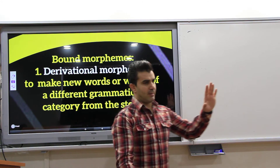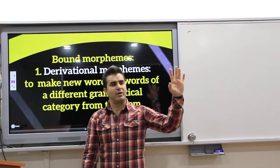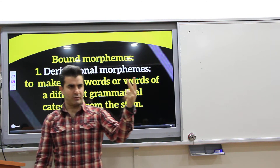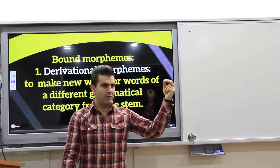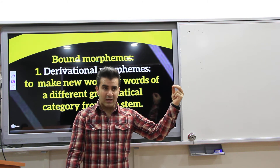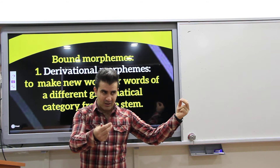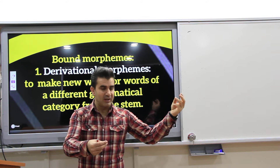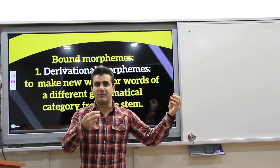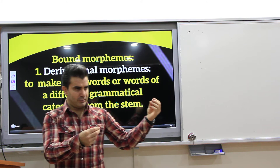So we said morphemes are divided into two categories: lexical — it has a meaning, it conveys a meaning — and functional, which conveys a function of the language.